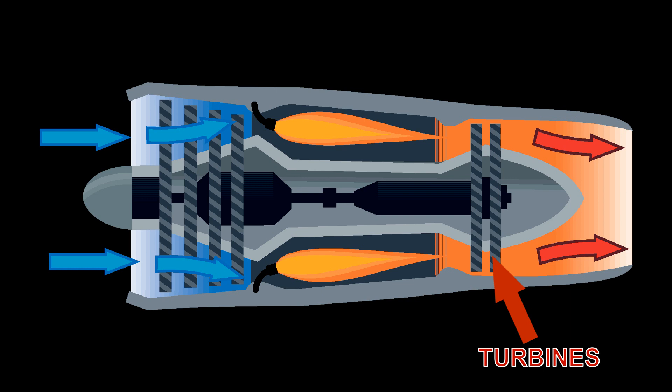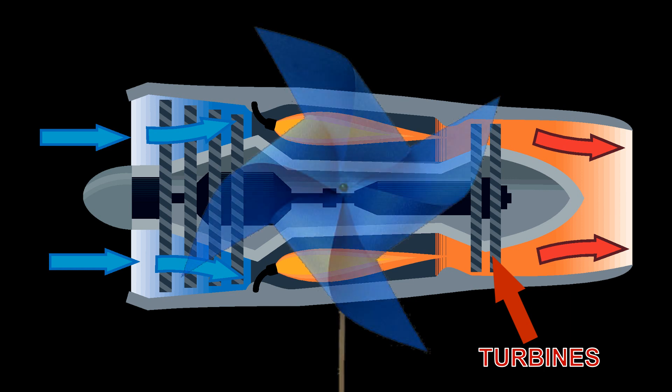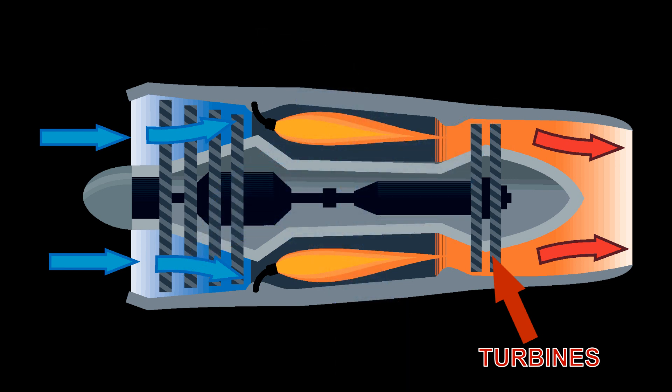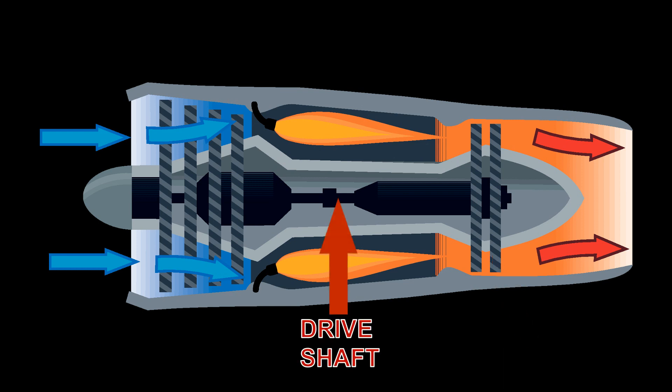When the air passes over the turbines, the turbines rotate, in a similar manner as blowing on a toy windmill will turn the windmill blades. The rotation of the turbines will turn the driveshaft. The driveshaft will not only drive gearboxes, but its main function is to turn the compressors.